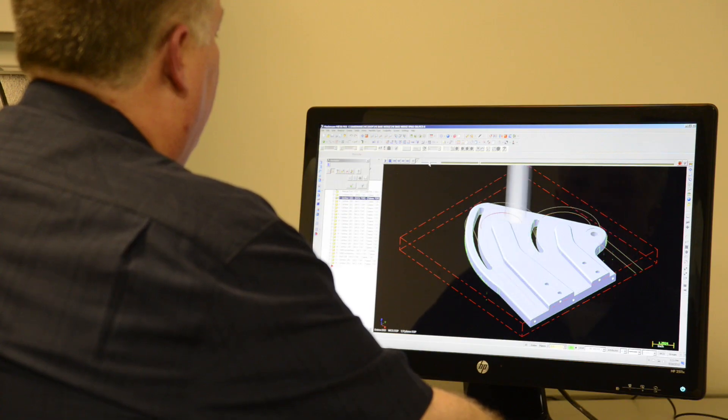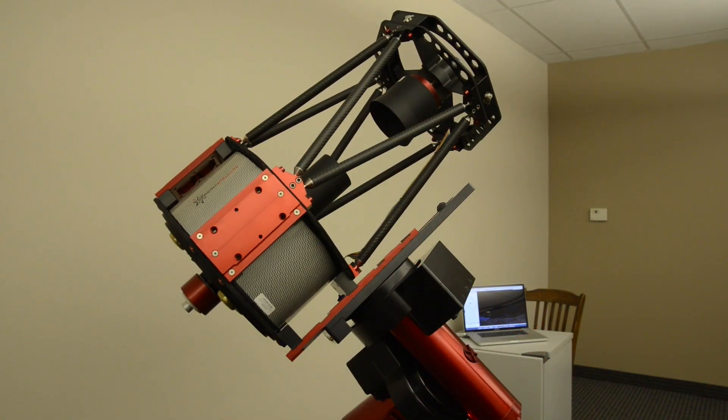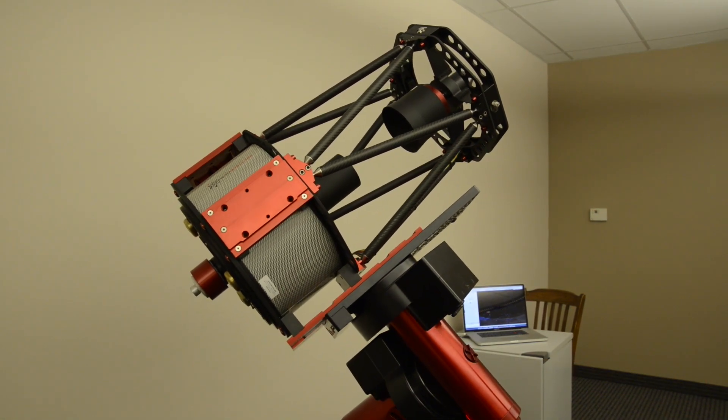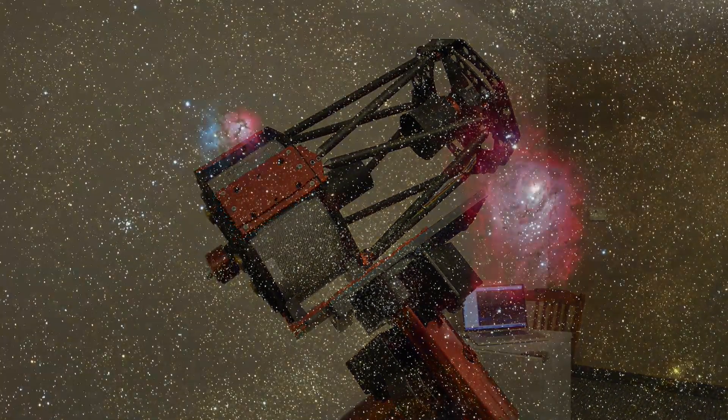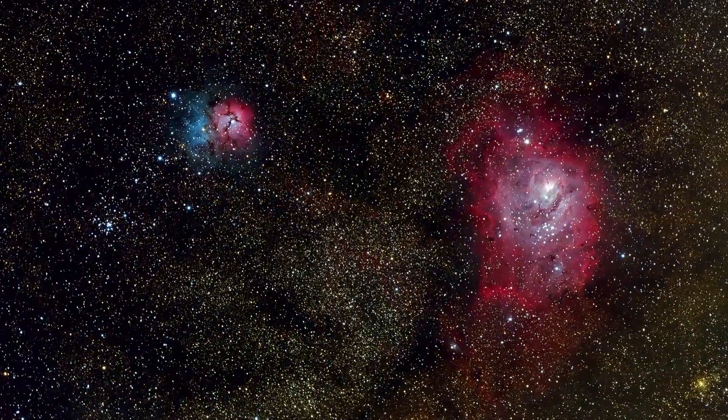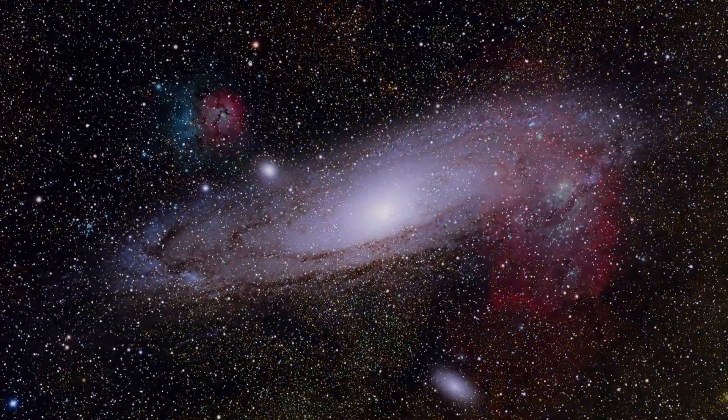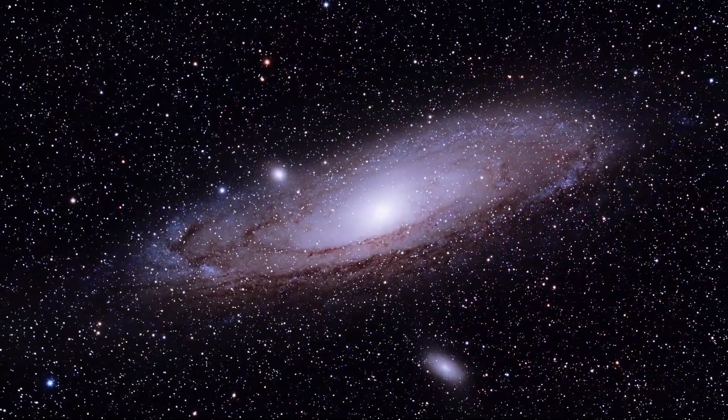In machining, everybody talks about tolerances in thousandths or ten thousandths of an inch. Here at Software Bisq, our tolerances are in arc seconds, usually five arc seconds or less, which is the equivalent of a golf ball size at ten miles.